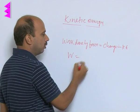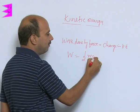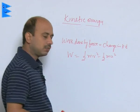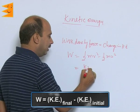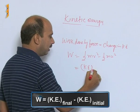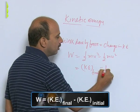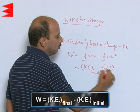So we can write w is equal to half m v square minus half m u square. We can write here kinetic energy final, that is final kinetic energy minus kinetic energy initial.